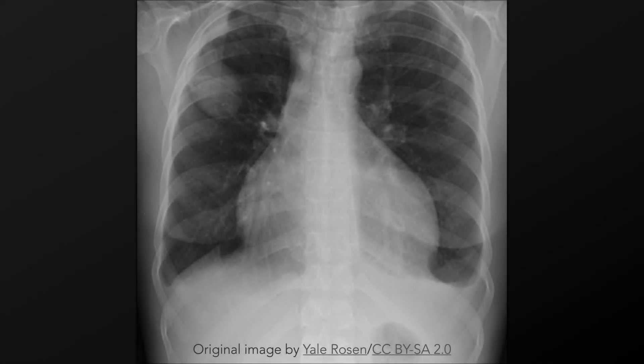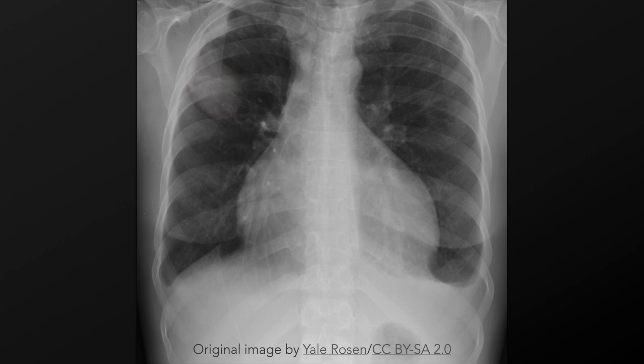Aspergilloma is often manifest radiographically as a focal ovoid and non-speculated opacity, more commonly located in the upper lobes. If liquefaction necrosis occurs, then there may be a central area of radiolucency. A thin-walled area of radiolucency can be found above or surrounding a cavity in Aspergilloma, a finding referred to as the air crescent sign.